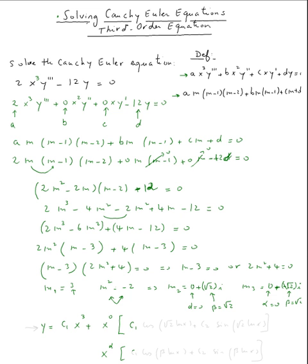So you can see x^α[c₁cos(β ln x) + c₂sin(β ln x)], when you have two complex roots. So c₁cos(√2 ln x) + c₂sin(√2 ln x). And this is the general solution for the homogeneous Cauchy-Euler equation.